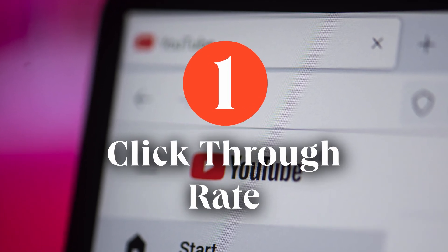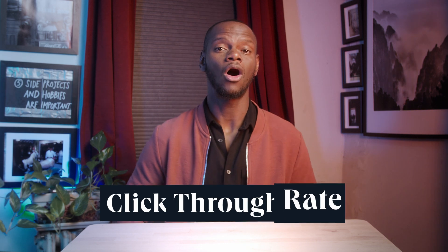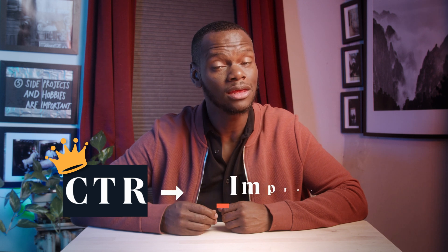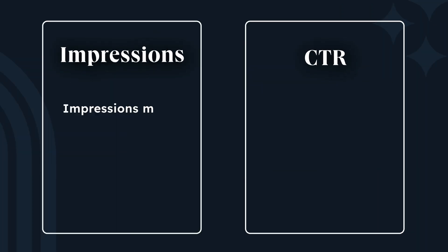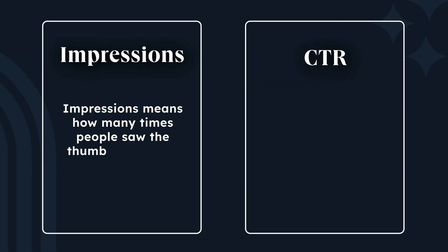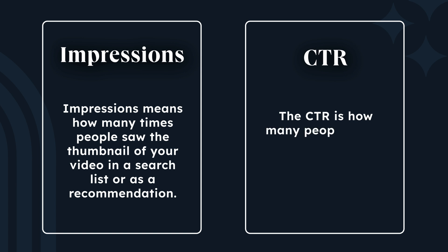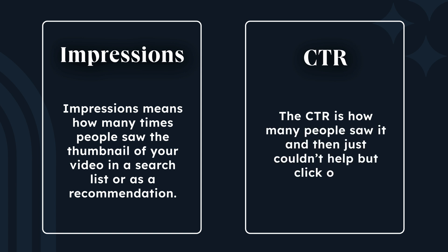Number one: click-through rate. CTR is the king of YouTube performance and is closely related to impressions. Impressions means how many times people saw the thumbnail of your video in a search list or as a recommendation. The CTR is how many people saw it and then couldn't help but click on it.